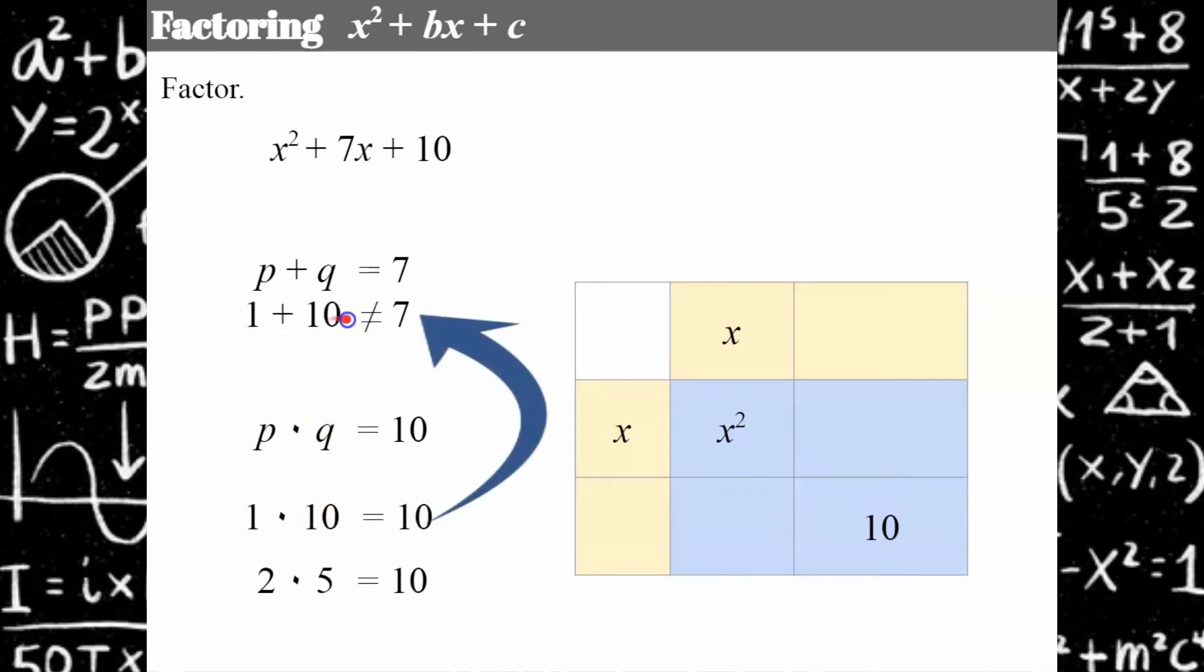I'm going to check 1 times 10. Well 1 plus 10 does not equal 7, so this cannot be the pair of factors. That leaves 2 times 5 which is 10. Let's check it: 2 plus 5 is 7, so it checks. My factors are 2 and 5.